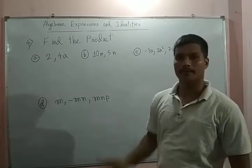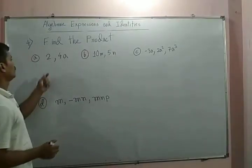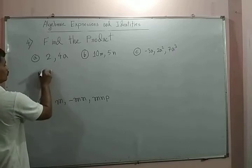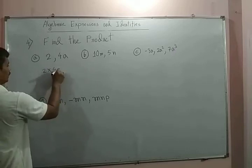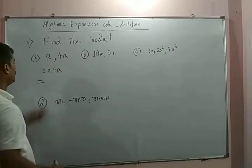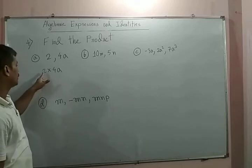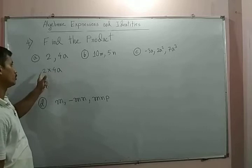First we go to (a). Here we have to find a product of 2 into 4a. First we have to see the numericals. Here we have 2, this one is 4. Two fours are eight, so the product is 8a.